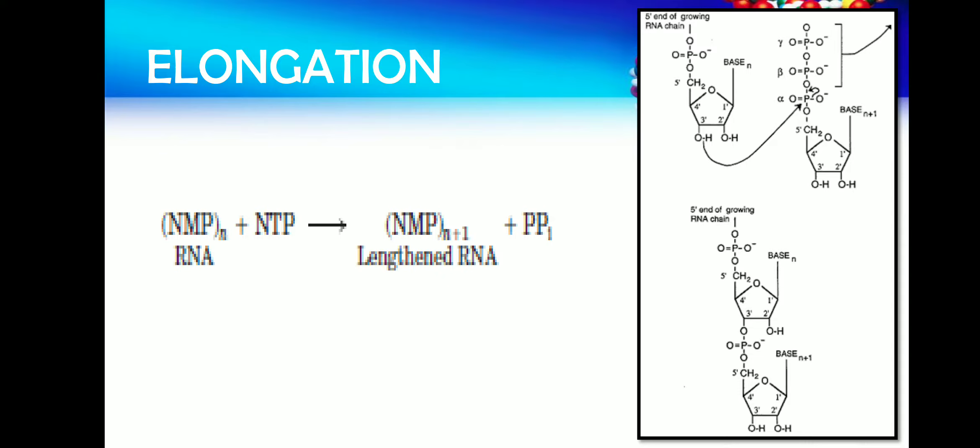Once the RNA polymerase escapes from the promoter region, it reaches the leader sequence. In the leader sequence, the first nucleotide will be added onto the mRNA.